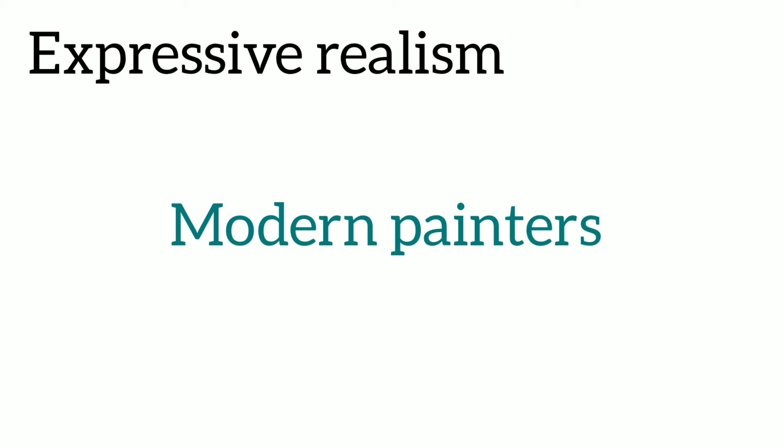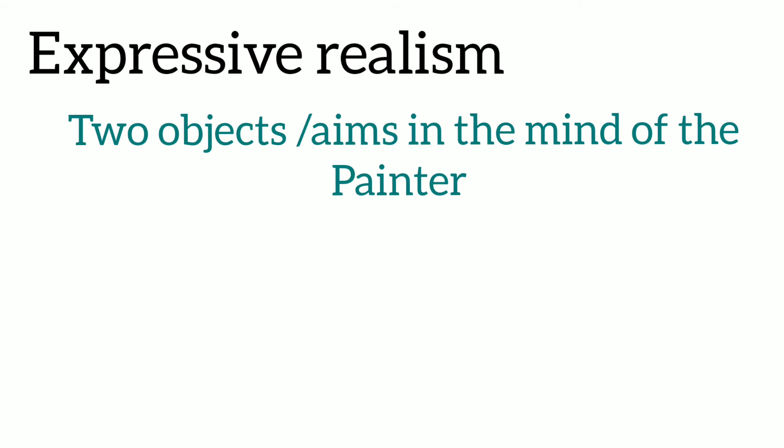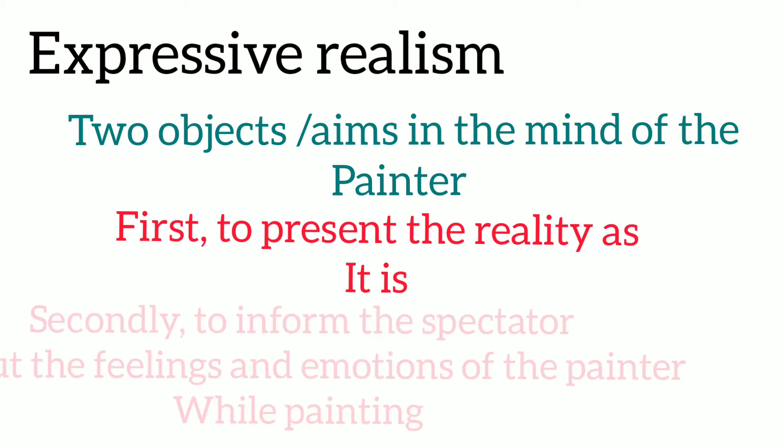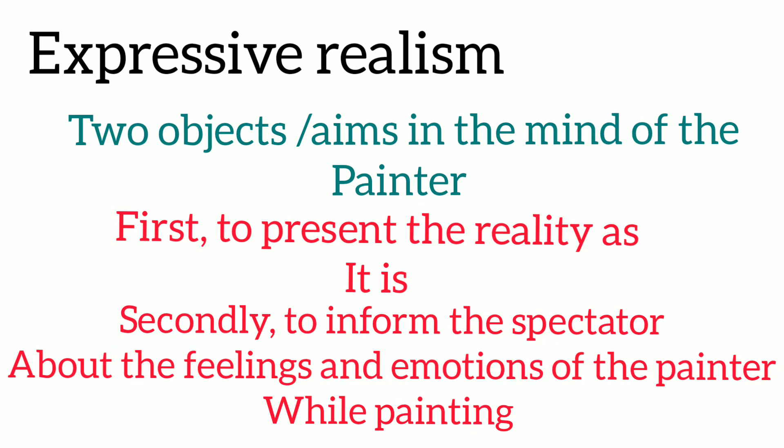So according to Ruskin, there must be two objects or aims in the painter's mind while painting। जो painter है उसके mind में दो views होने चाहिए। First of all, to present reality as it is — यानि कि जो reality है, उसे as it is depict करे। And secondly, to inform the spectator about the feelings and emotions which the artist had while painting a picture — कि वो अपनी feelings and emotions spectator को बताए, कि जब वो ये painting कर रहा था, उस time उसके क्या emotions थे।